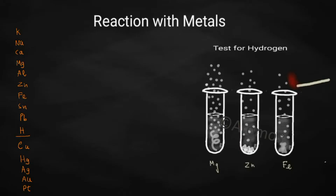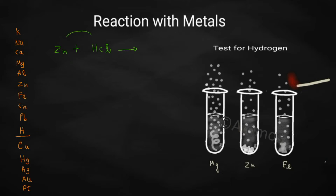Let's start with the chemical properties of hydrochloric acid. We are going to learn how a metal can react with dilute hydrochloric acid. We are taking a little bit of zinc granules and adding that into dilute hydrochloric acid. The position of zinc in the reactivity series is above hydrogen. Metals which are above hydrogen in the reactivity series are capable of displacing hydrogen from acids. So you will be getting zinc chloride, and hydrogen gas will be produced.